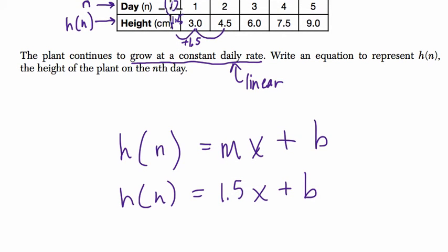So at zero days, we're at one and a half centimeters. So our final equation is h of n equals 1.5x plus 1.5.